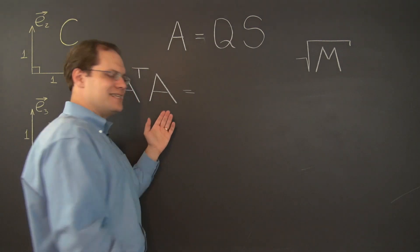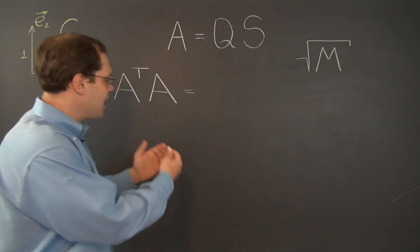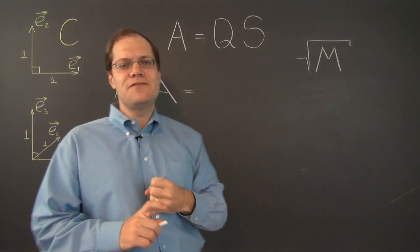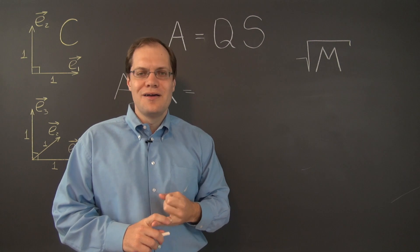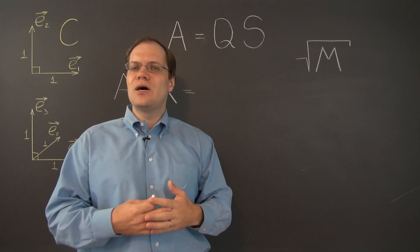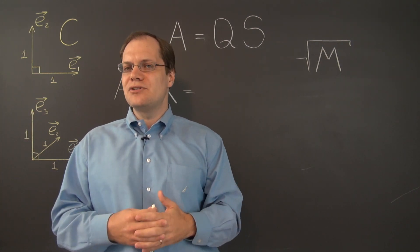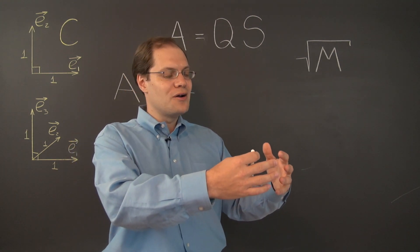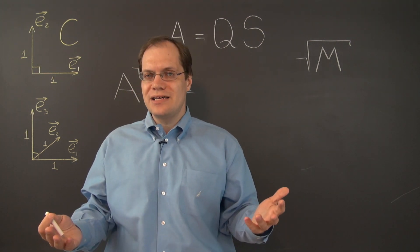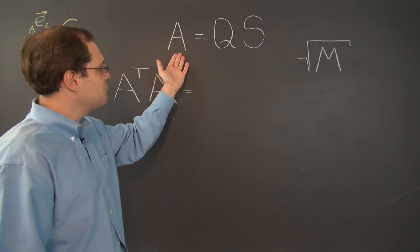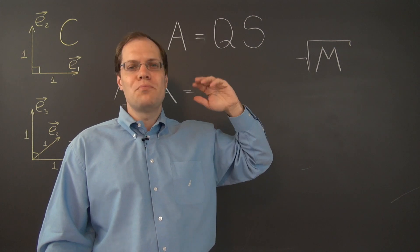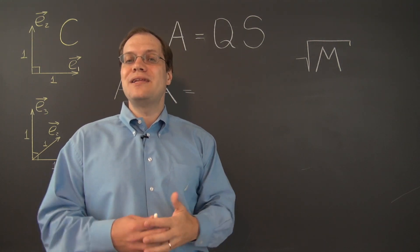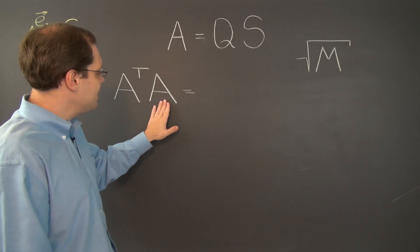A transpose A is a very nice combination because whatever problems A might have — it might be defective, it might have complex eigenvalues, it might even be a rectangular matrix with no eigenvalues or eigenvectors. There is no such thing as eigenvalues and eigenvectors for a rectangular matrix, only for square matrices. Singular values are beautiful in that they work even for rectangular matrices, but eigenvalues and eigenvectors only for square matrices. So A could have all these problems, but once you evaluate this combination, all of the problems go away.